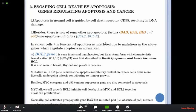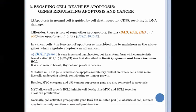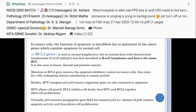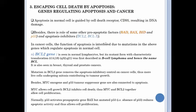Besides, there is the role of sub-other pro-apoptotic factors. These are the BAX, BATS, and the p53 and the apoptosis inhibitors. These are BCL2 and BCLX. In the cancer cell, the function of apoptosis is inhibited due to mutations in the above genes which regulate apoptosis in the normal cell. The BCL2 gene is seen in normal lymphocytes, but its mutant form with the characteristic translocation 14:18 and 32:21 was first described in B-cell lymphomas. It is also seen in the breast and thyroid carcinomas.